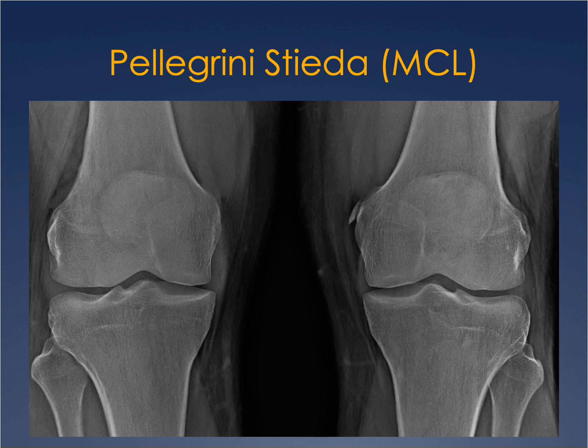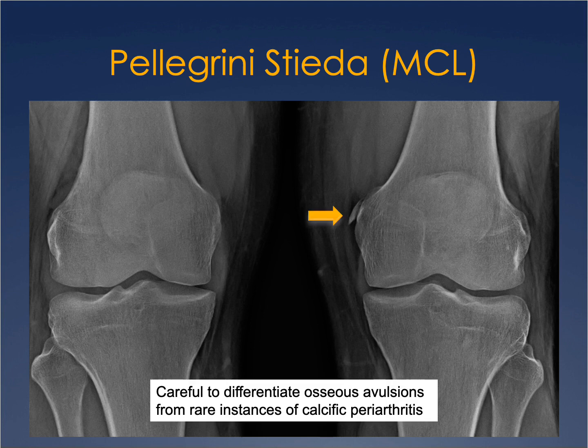Other medial compartment findings include a small area of ossification or calcification at the medial epicondyle. If acute with thickening of the medial collateral ligament, this can be an acute MCL osseous avulsion — a Pellegrini-Stieda lesion. If more chronic without ligament thickening, it may reflect a chronic MCL injury leading to instability and osteoarthritis. Rarely, sudden localized intense tenderness over that area can represent acute calcific tendinitis or calcific periarthritis.